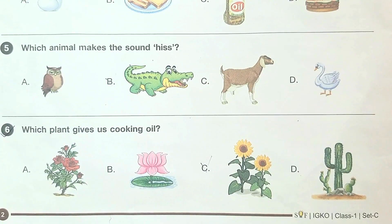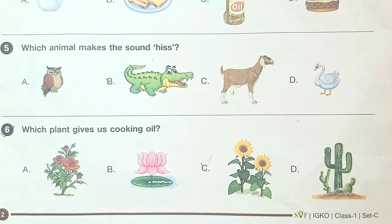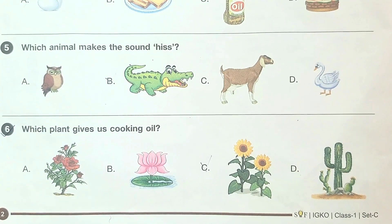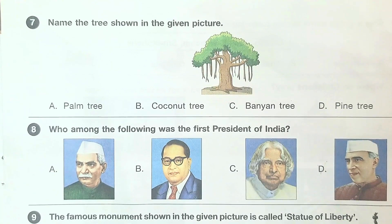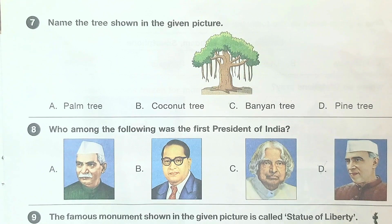Question number 6: which plant gives us cooking oil? Question number 7: name the tree shown in the given picture. The answer is option C, Banyan tree.